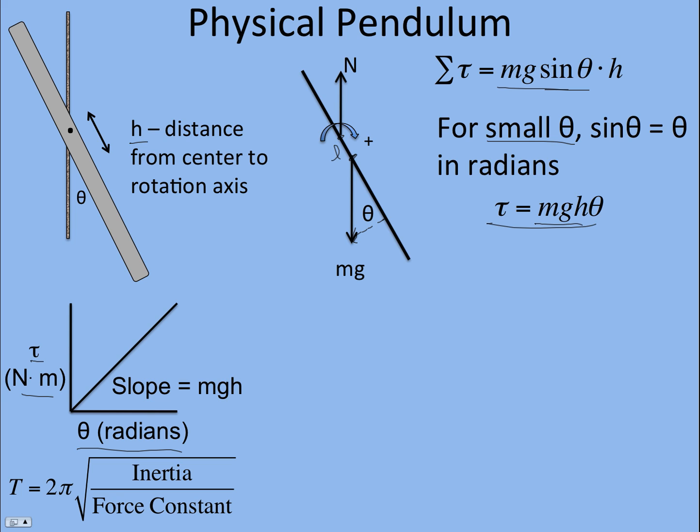So we can get the equation for the period of a physical pendulum. If we go to the generalized equation, instead of period is 2π√(m/k), m is the inertia, k is the slope of our displacement versus force, or in this case torque graph. You could really call this a torque constant here, but we're just going to keep calling it force constant, the slope of the graph. So the slope is the torque constant.